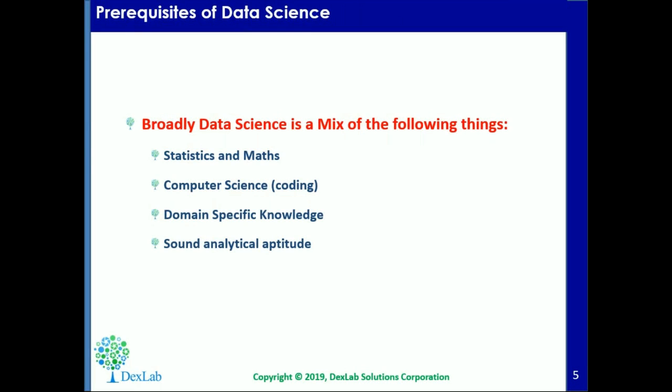What would be the prerequisites of data science? This list is by no means exhaustive, but essentially if you have a solid grounding in statistics and mathematics, along with decent coding skills and a very strong analytical aptitude, combined with some domain-specific knowledge, then you're well on your way to becoming a data scientist.